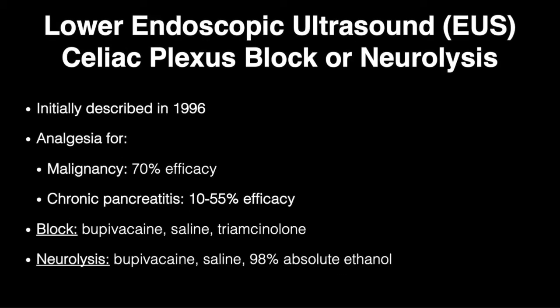From an interventional endoscopic standpoint, the celiac plexus block is an example of a currently used nerve block performed endoscopically. The procedure has been widely adopted since its inception in 1996 as a method of pain relief in malignancy or chronic pancreatitis. Upper endoscopic ultrasound is used for target visualization, while a mixture of medications including local anesthetic mixed with saline and steroid is used for celiac plexus block.